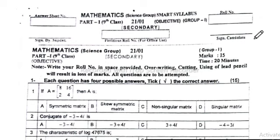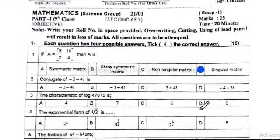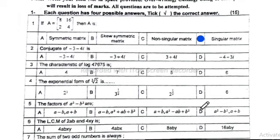Question 1: if A is equal to matrix [8, 16; 2, 4], find the determinant of A. The determinant of A equals 8×4 minus 16×2, which is 32 minus 32, so the determinant equals zero. This is a singular matrix. Option D is correct.